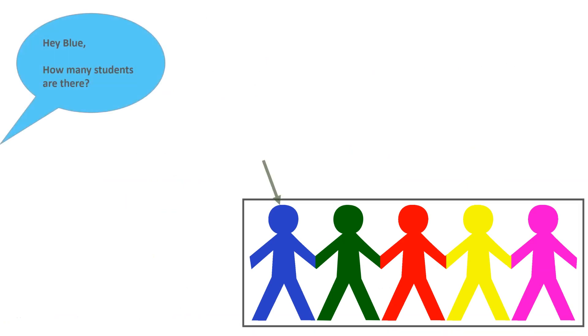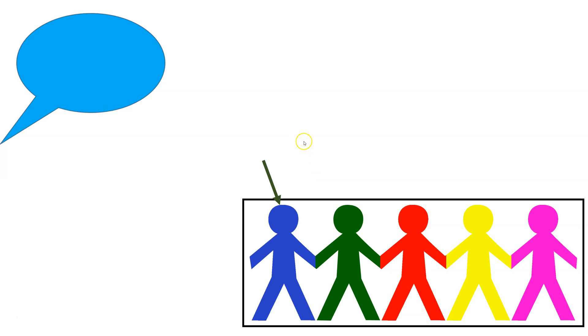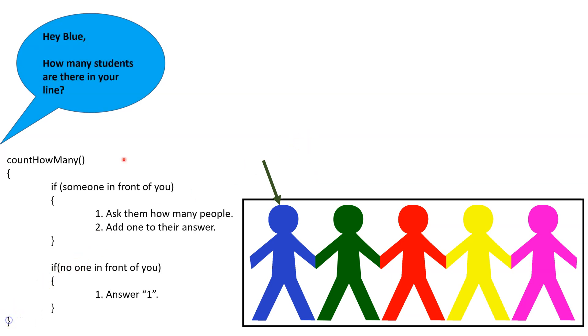Let's imagine that we have a line of school children that we want to count. The teacher asks the student at the end of the line, Blue, how many students are there? Blue could handle this problem iteratively, like with a for loop or a while loop, and go through and count each student individually, then respond with the total. Instead, Blue decides to handle the problem recursively. The recursive algorithm he comes up with, 'count how many', has two parts.